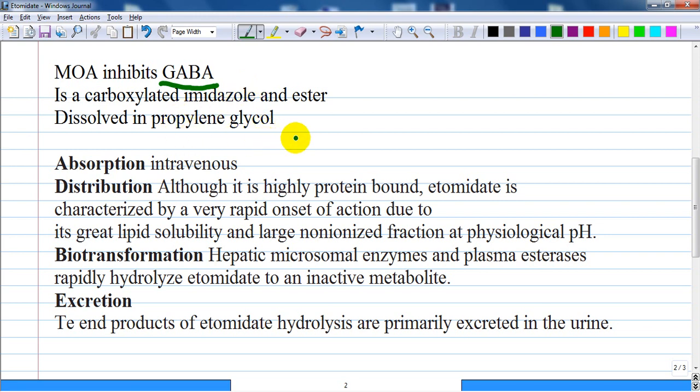This is an undesirable effect to see. Etomidate is an imidazole derivative and an ester. It is prepared as a 0.2% solution at pH of 4.1.